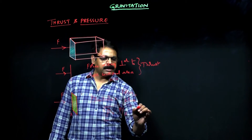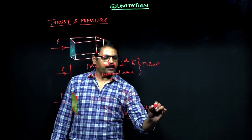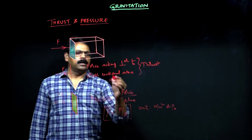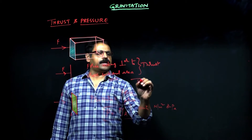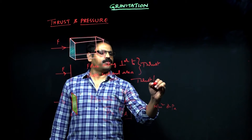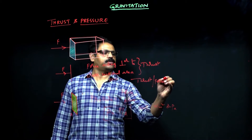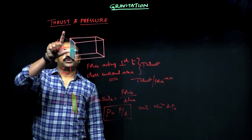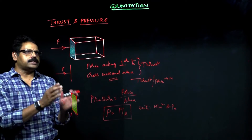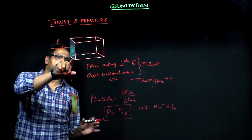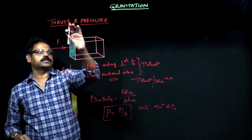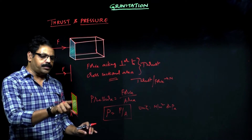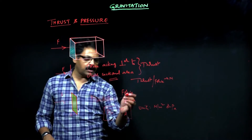Pressure is equal to force per unit area. Its units come out to be Newton per meter square, or Pascal. Thrust units are the same as that of force — both thrust and force are represented by Newtons. To summarize: thrust is the force acting perpendicular to the cross-sectional area, and force acting per unit area of cross-section is called pressure.